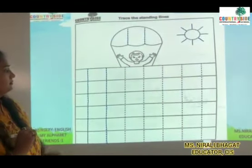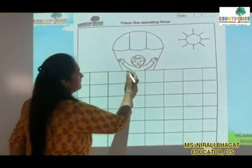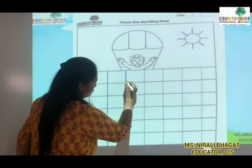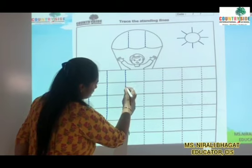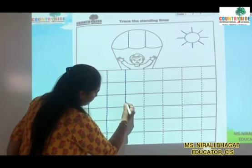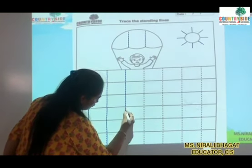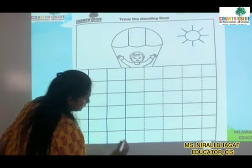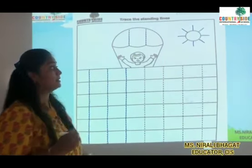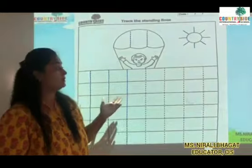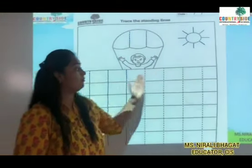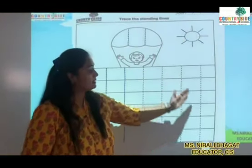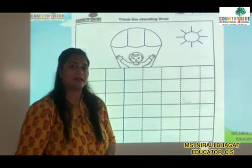This is standing line. So slowly, slowly dot to dot you will join. This is the standing line pattern. Same way you will complete these dotted lines.